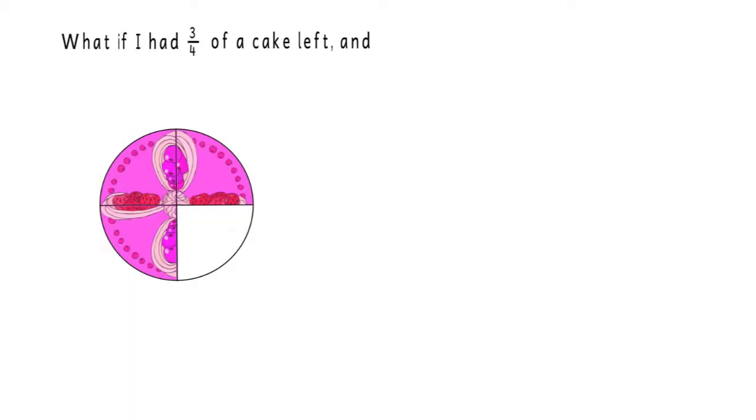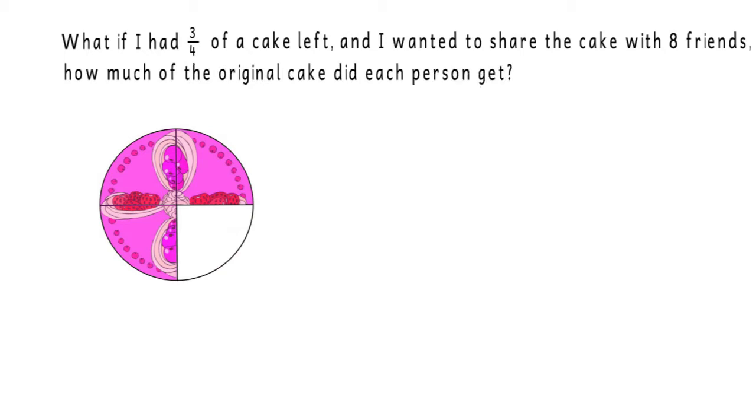What if I had three-fourths of a cake left and I wanted to share the cake with eight friends? That would mean that there are nine of us who want to eat cake. How much of the original cake did each person get? Well, first I need to know how many pieces the original cake was cut into. We can set this up as the ratio three-fourths is equal to nine over some number of slices.